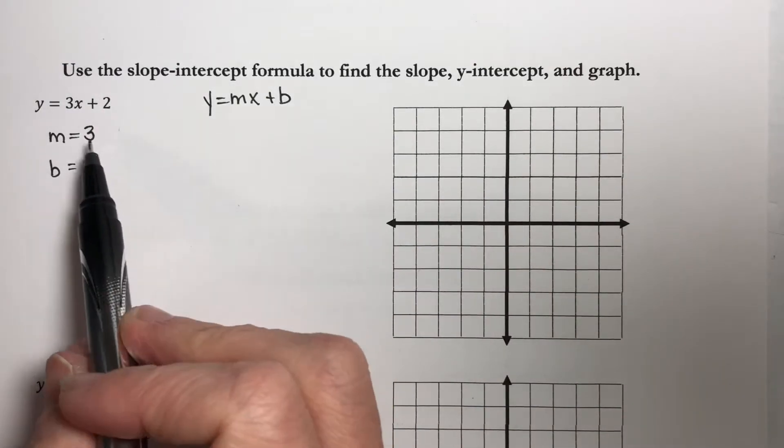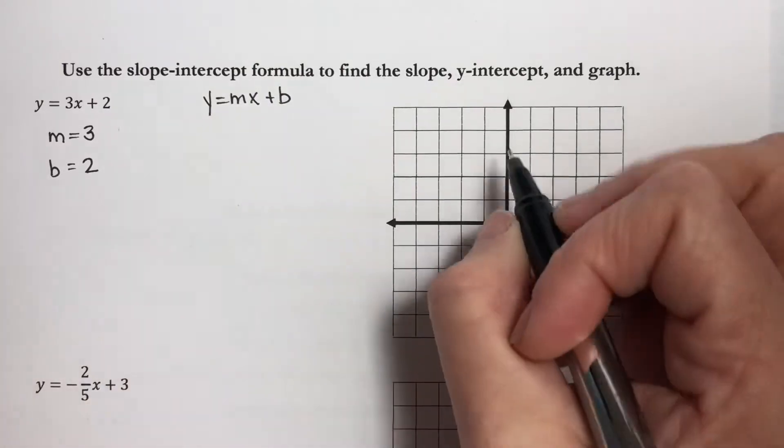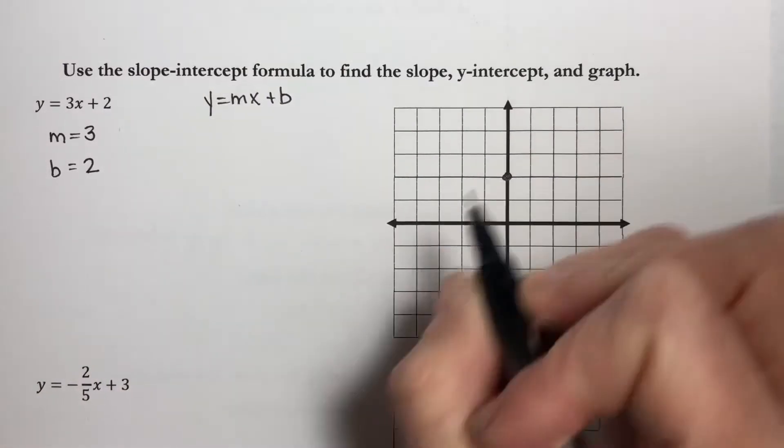So what we're going to do is you're going to start off with the point that you know. I know I crossed the y-axis at 2, so I'm going to put my 2 right there.